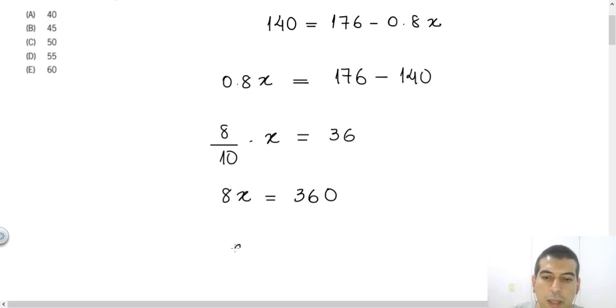So let the variable alone. Send this 8 to the right side. This 8 is multiplying, so the 8 on the right side will divide the 360. So the result will be 360 divided by 8.